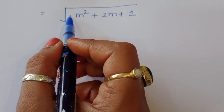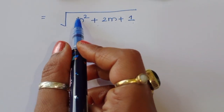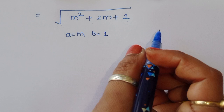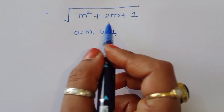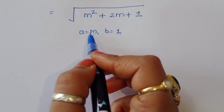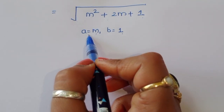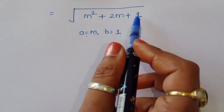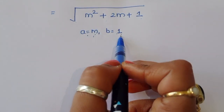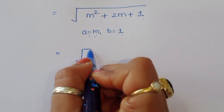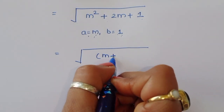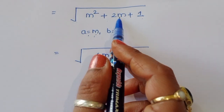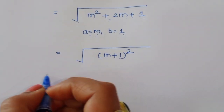You can see here this is the square root of m squared plus 2m plus 1. Using the identity (a+b) squared equals a squared plus 2ab plus b squared, with a equal to m and b equal to 1, this is the square root of (m plus 1) whole square.